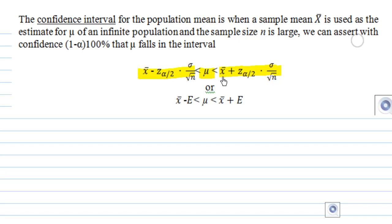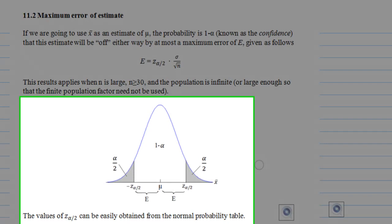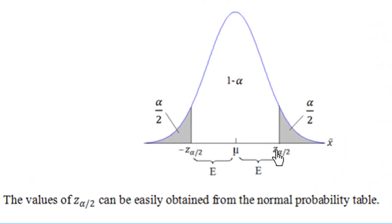And what is z_{α/2}? Recall that z_{α/2} is a number on the standard normal curve such that the central area is 1 - α and the tail on both ends each is α/2.